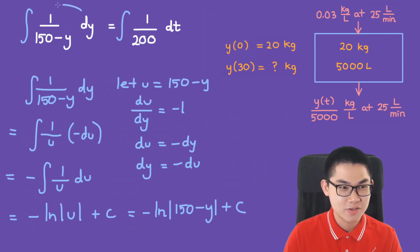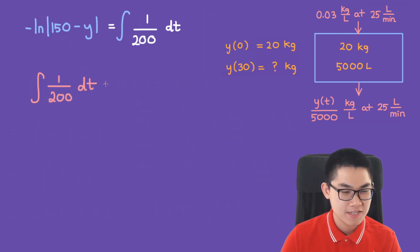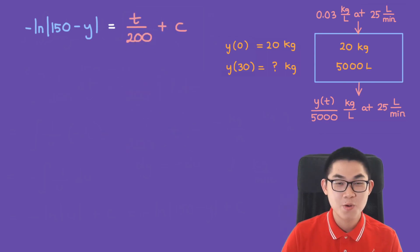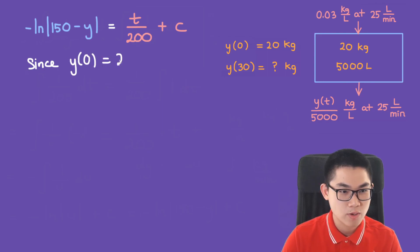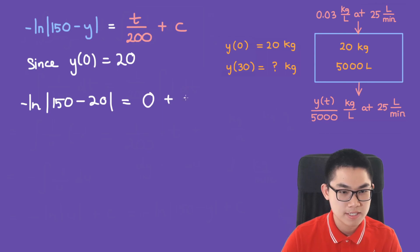Now we combine both sides and move to Step 4: solving for C. Since y(0) = 20, substituting t = 0 and y = 20 gives −ln(150 − 20) = 0 + C, so C = −ln(130). Multiplying both sides by −1 gives ln(150 − y) = −t/200 + ln(130).